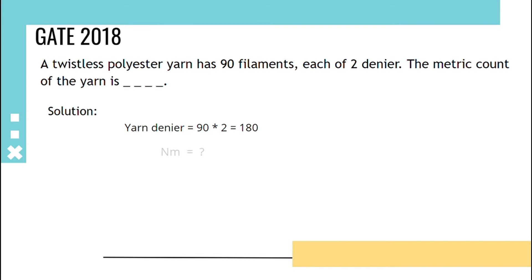We have yarn count in denier. The conversion formula for denier to metric count is 9000 upon denier, that is 9000 upon 180, so the metric count becomes 50.